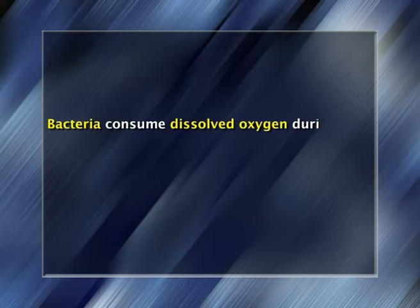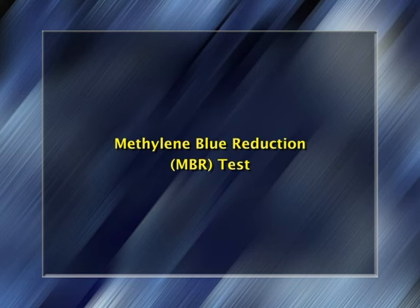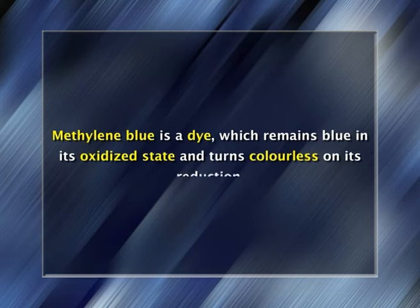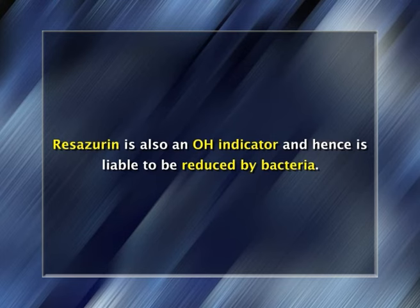Dye Reduction Test: certain dyes act as oxidation-reduction indicators. Bacteria consume dissolved oxygen during growth in milk and consequently reduce the oxidation-reduction potential to a level at which these dyes are reduced and decolorized, allowing indirect estimation of bacterial numbers. Methylene Blue Reduction (MBR) test: methylene blue remains blue in its oxidized state and turns colorless on reduction, and this is used to estimate the bacterial load of milk and milk products. Resazurin Reduction (RR) test: resazurin is also an oxidation-reduction indicator; the various colors developed during reduction are compared with a standard resazurin disc using a resazurin comparator.